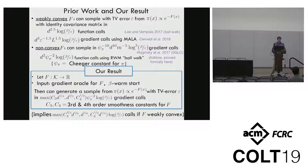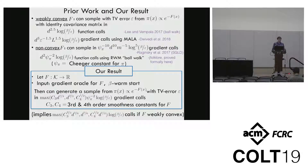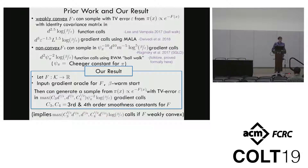Now I'll talk about some prior work in this area as well as the result that we prove. For the setting where f is weakly convex, one can sample from the Gibbs distribution with a TV error epsilon in a number of function evaluations that grows like dimension to the 2.5, and also grows logarithmically with 1 over epsilon. This was proved for the Balwak algorithm. If you want to sample specifically with the MALA algorithm, then the current best bound in the weakly convex setting grows like dimension cubed and polynomially with epsilon in terms of the number of gradient evaluations.